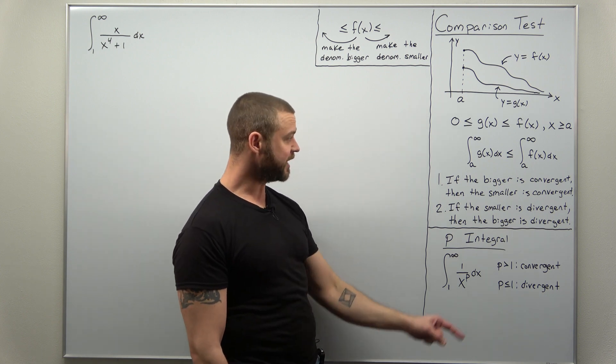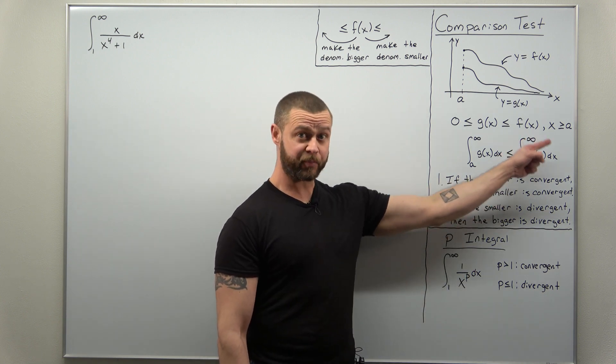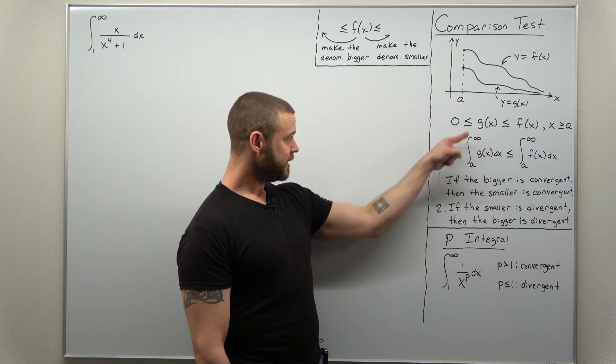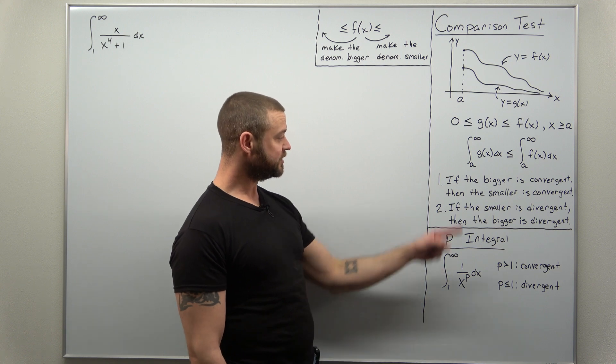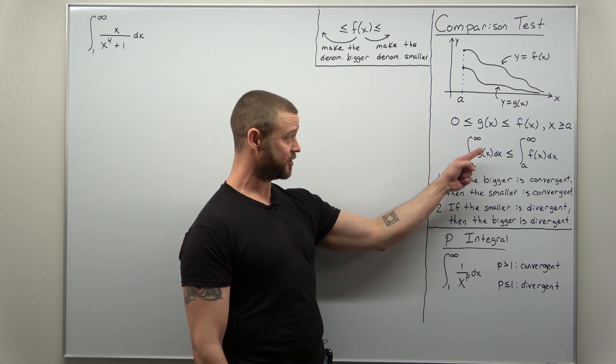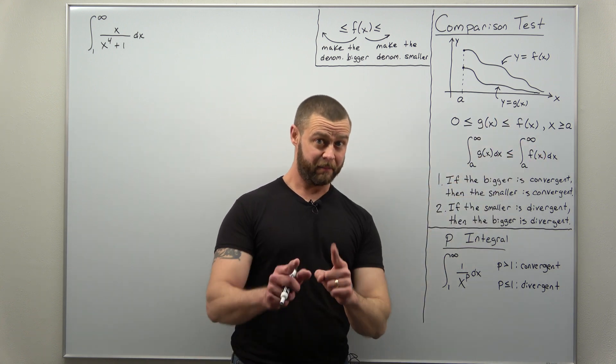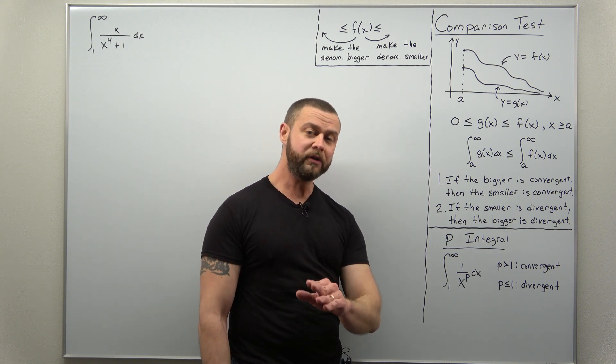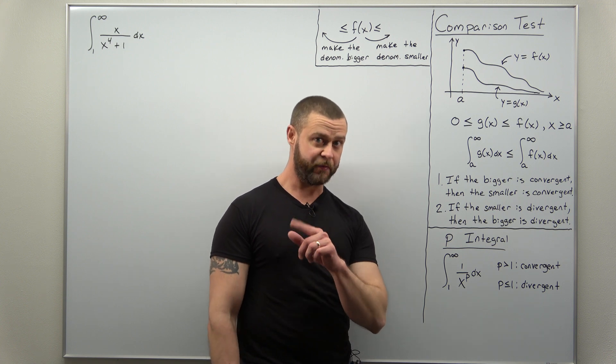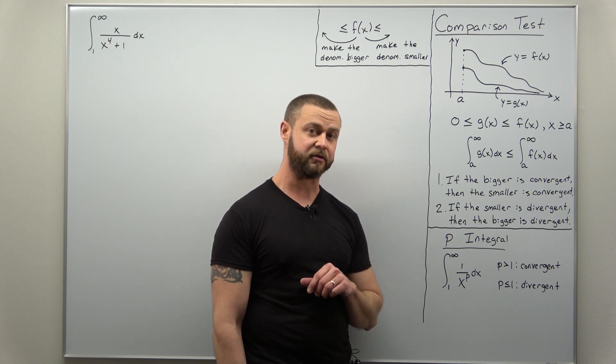Your two conclusions say if the bigger improper integral is convergent, then the smaller one must be convergent. The other conclusion is if the smaller one is divergent, then the bigger one must be divergent. Those are the only two definitive conclusions with the comparison test for improper integrals.